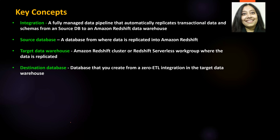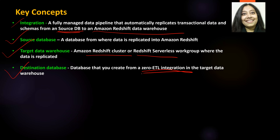Let us look at some key concepts. First is integration — a fully managed data pipeline that automatically replicates transactional or operational data and schema from your source DB to Amazon Redshift data warehouse. Your target data warehouse is an Amazon Redshift cluster or Redshift serverless workgroup, wherever the data is replicated to. You also have a destination database, which is the database you create from a Zero ETL integration in the target data warehouse, which is Redshift.